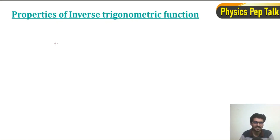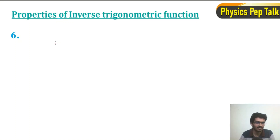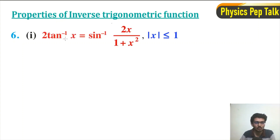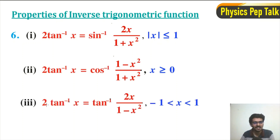Hello everyone and welcome to Physics Pep Talk II. This video covers the 6th set of properties of inverse trigonometric functions. This is the last set of properties. There are 3 properties: first, 2 tan inverse of x is equal to sin inverse of 2x divided by 1 plus x square, for mod x less than or equal to 1. Second, 2 tan inverse of x is equal to cos inverse of 1 minus x square divided by 1 plus x square, for x greater than or equal to 0. Third, 2 tan inverse of x is equal to tan inverse of 2x divided by 1 minus x square, for minus 1 less than x less than 1.